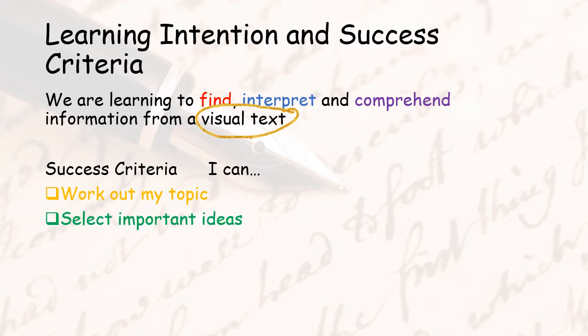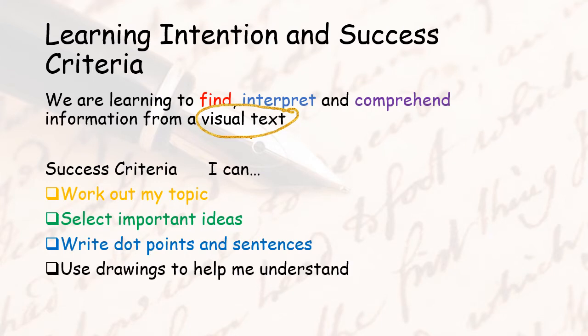The next that we have to be able to select important ideas. In all visual texts and in all written texts there is important ideas and there are ideas that are not as important. We have to be able to work those out. And then we have to be able to write these in dot points or in sentences and be able to put them into our own words. That's very important. And of course we use drawings to help us understand.